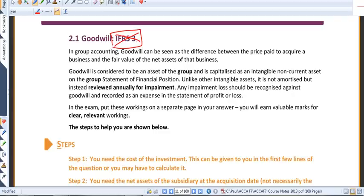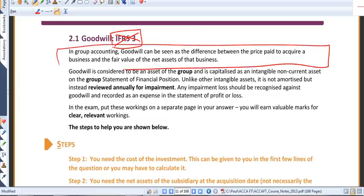International Financial Reporting Standard number 3 tells us how we treat goodwill. But this is a very simple idea. Goodwill is simply the difference between what you pay to buy a business and the fair value of the net assets of that business.